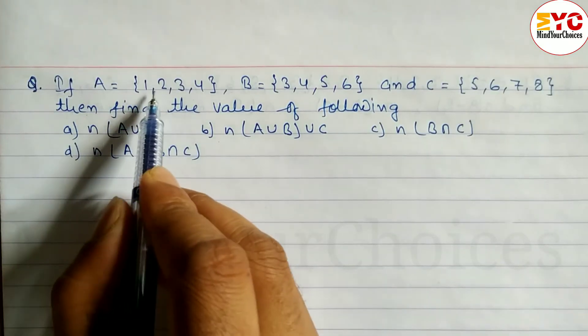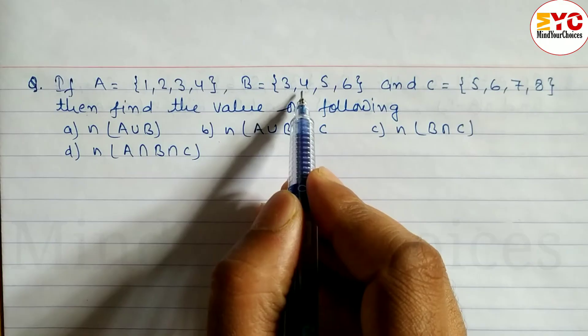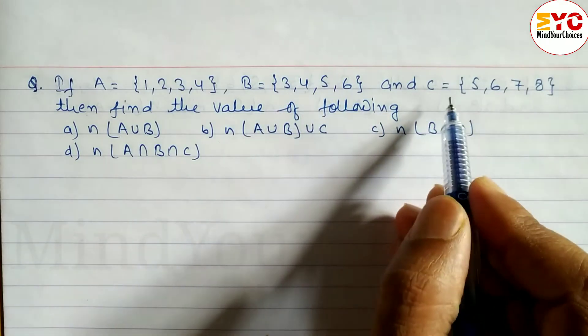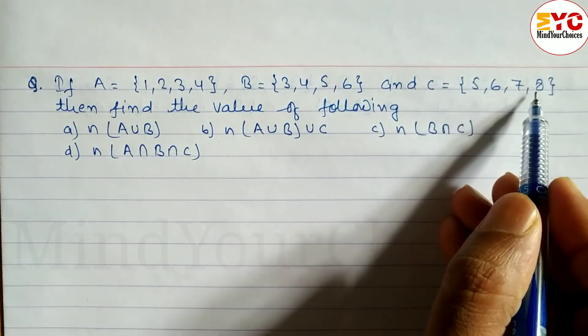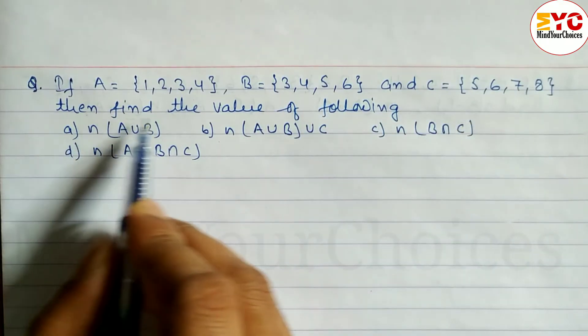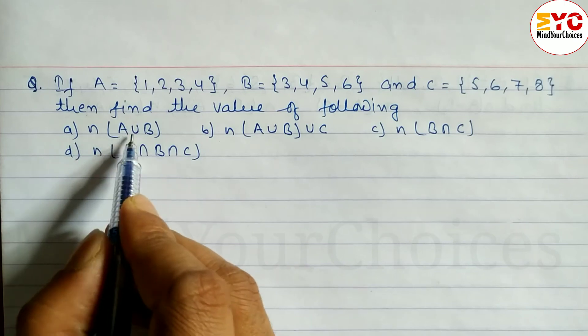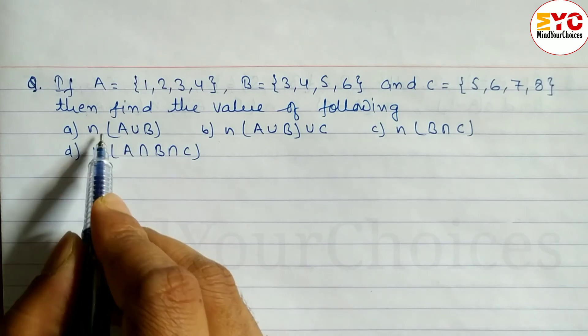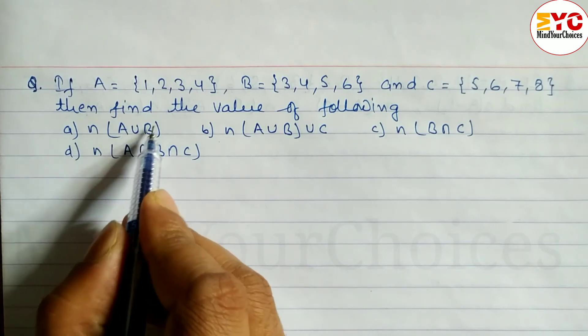If A is equal to {1, 2, 3, 4}, B is equal to {3, 4, 5, 6}, C is equal to {5, 6, 7, 8}, then we have to find out the value of N(A∪B) — the cardinal number of A union B.